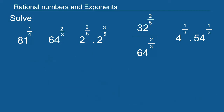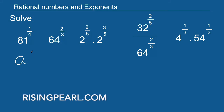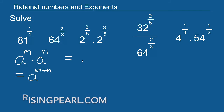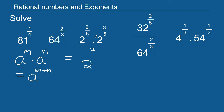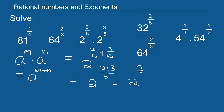Let us take a look at the third problem. Here we have the same base but different exponents, so we can apply the law a raised to the power m times a raised to the power n equals a raised to the power m plus n. We add the exponents: 2/5 plus 3/5. The LCM is 5, giving us 2 raised to the power 5/5, which simplifies to 2 raised to the power 1, or simply 2. This entire expression is equal to 2.